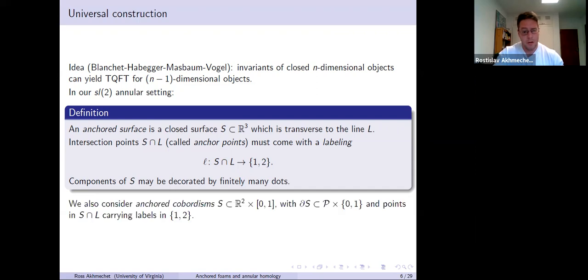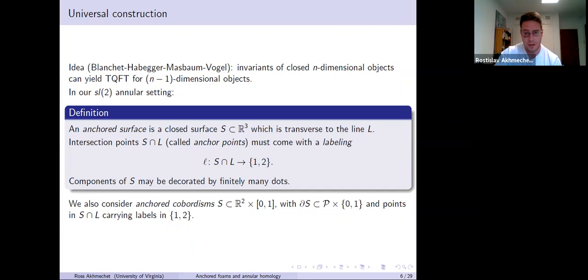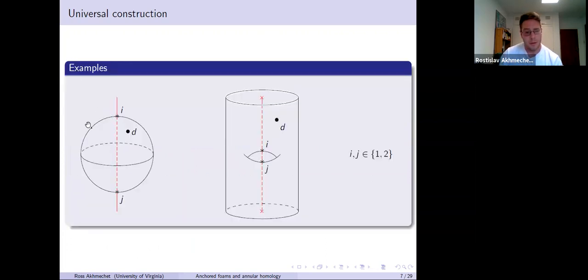We also consider anchored cobordisms: they live in R2 cross the interval, their boundary is disjoint from the line, but the interior of the surface can intersect the line transversely, and it also carries labels one or two. Here are some examples. On the left, here's just a two-sphere — it intersects the line twice and carries labels I and J at the anchor points with some number of dots. And here's an anchored cobordism going from one non-contractable circle on the bottom to one on the top, with possibly some genus, intersection points, and dots.